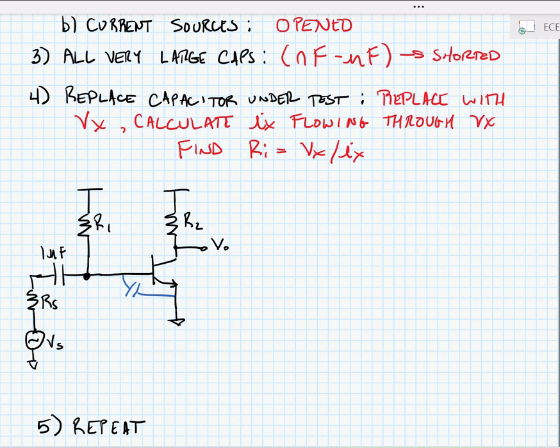So in this case, it's the capacitances at the junctions. C pi is the base emitter junction capacitance and C mu is the base collector junction capacitance. So in this case, let's look at an analysis just for C pi.